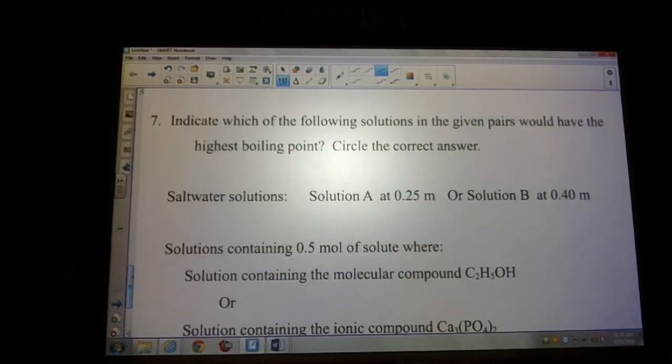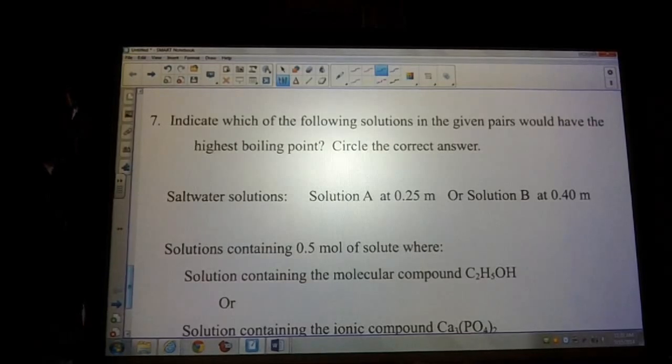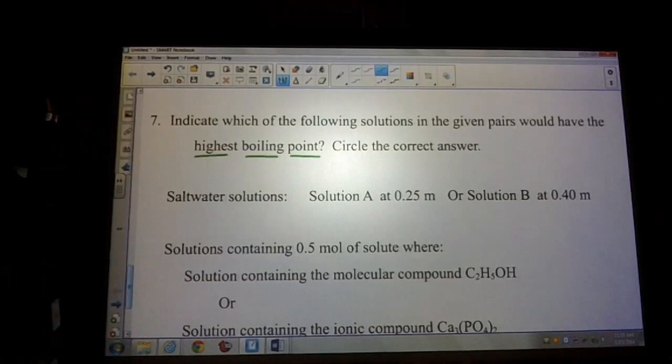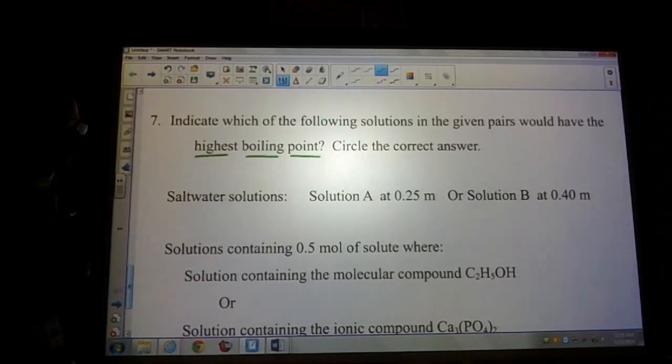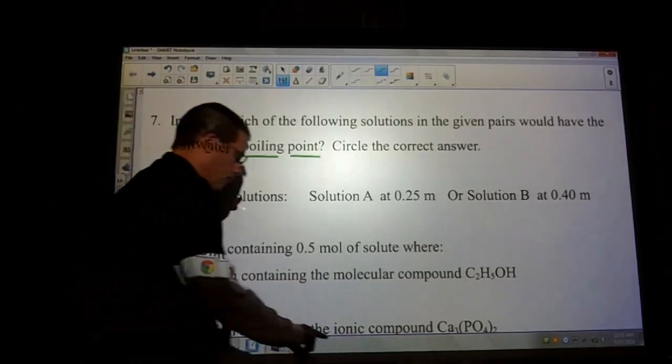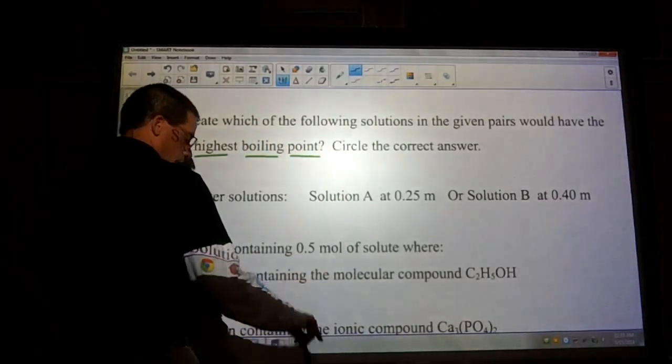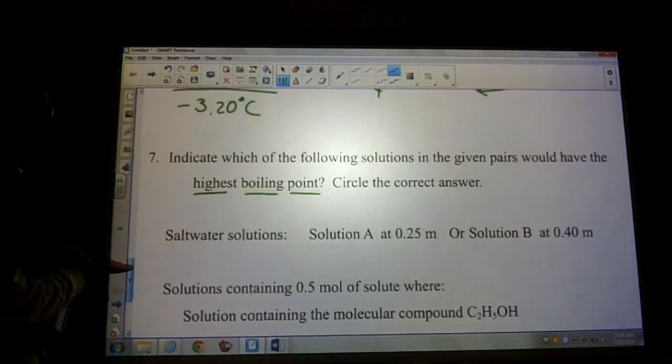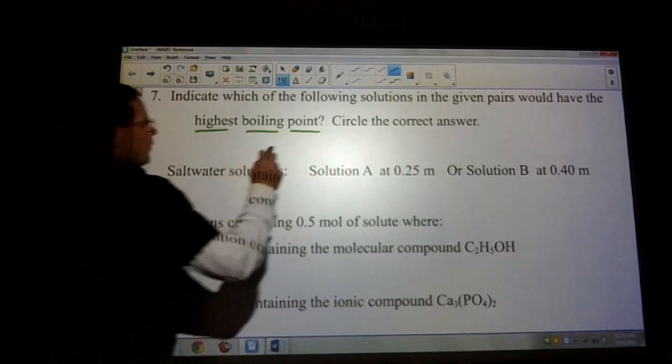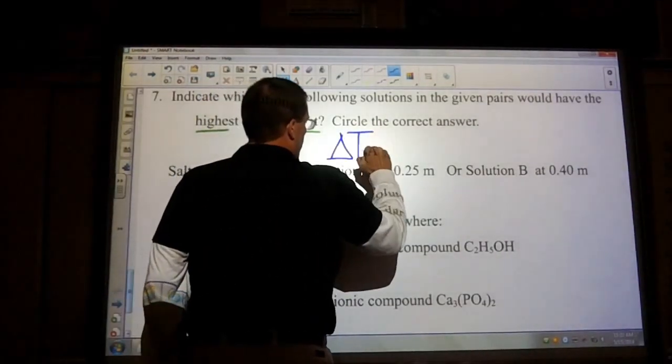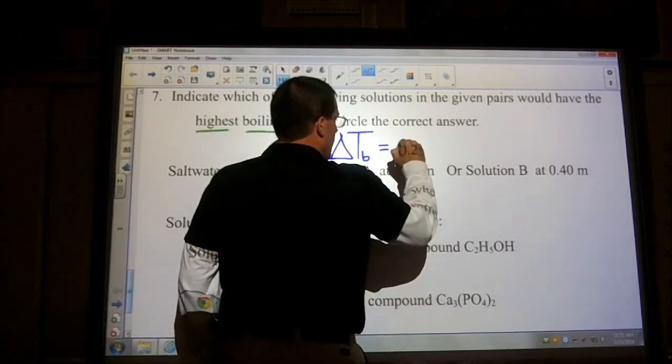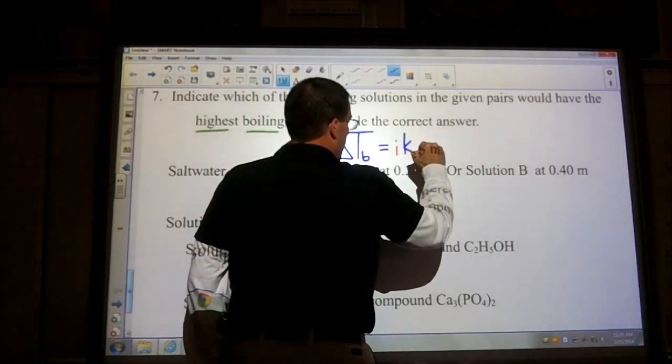Number seven, indicate which of the following solutions in the given pairs would have the highest boiling point. Circle the correct answer. What would be nice is if you could explain why it has a higher boiling point. Keep in mind what we're looking at is our boiling point. So what we're looking at is this equation here. We've got the delta T sub b, and your i there, your Kb, and your molality. What we have are two salt water solutions where solution A has a 0.25 molality and solution B has a 0.4 molality.